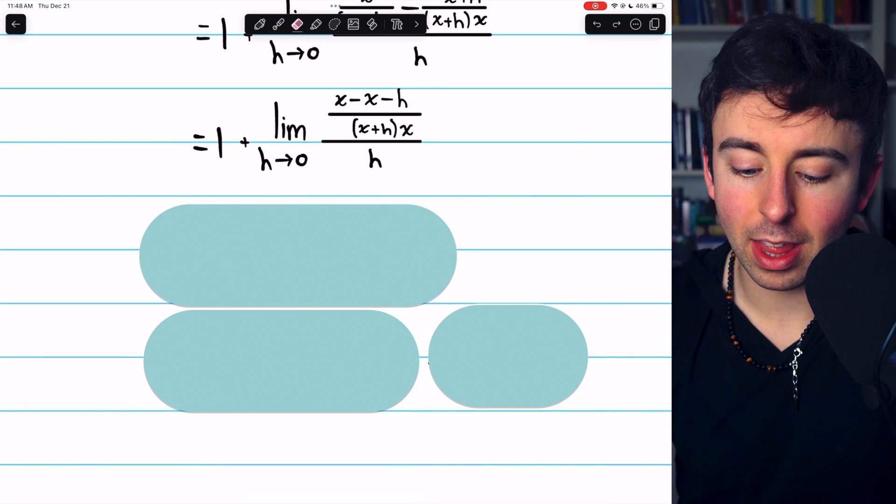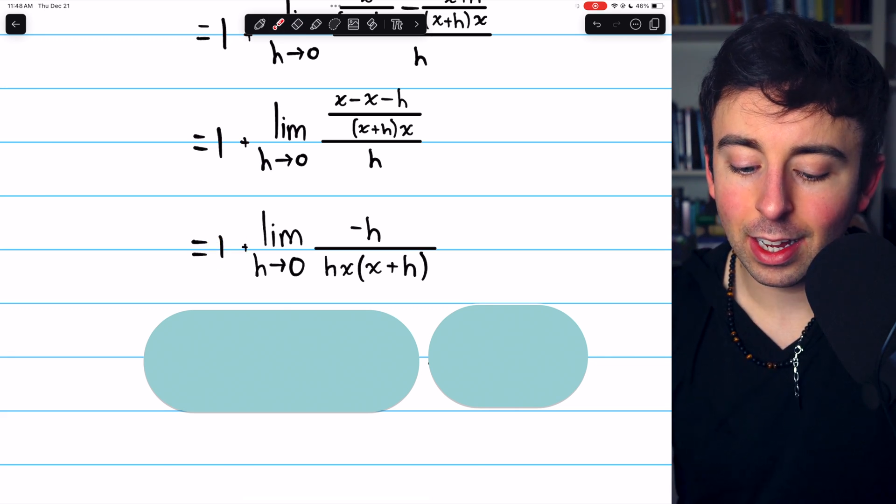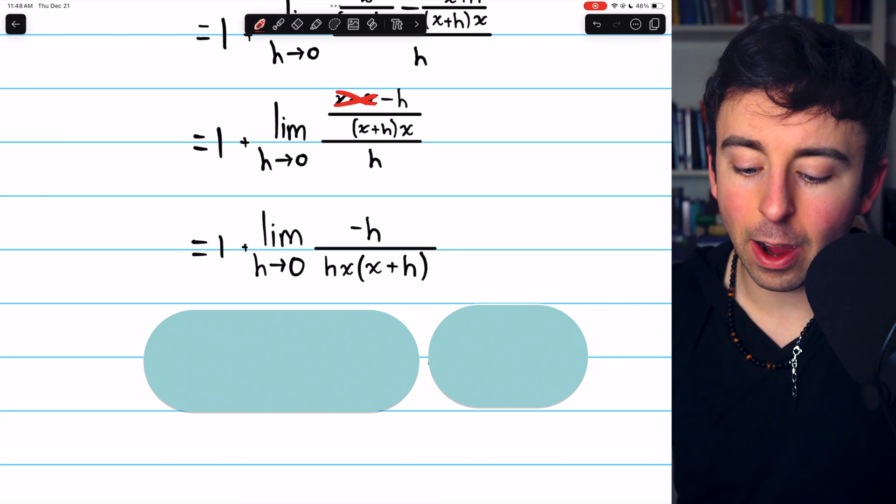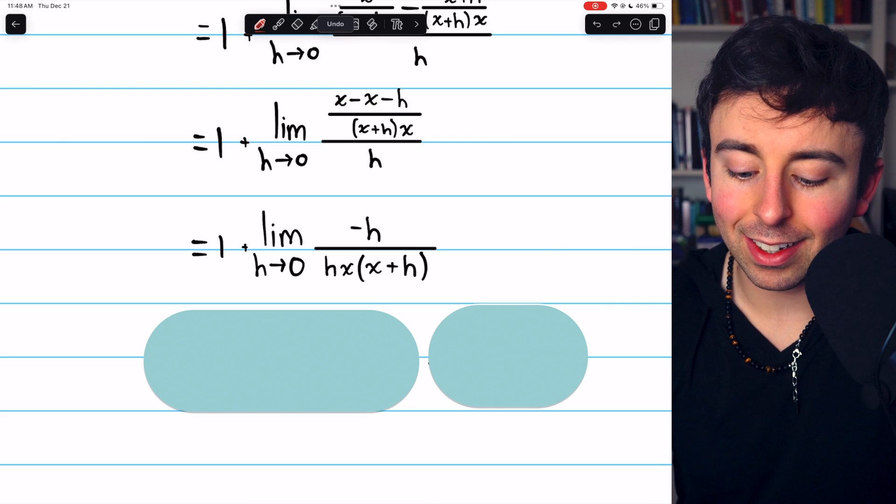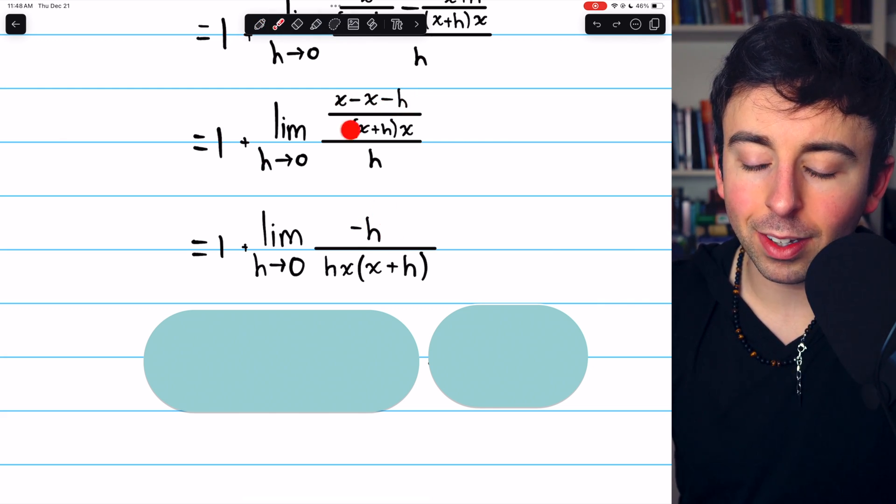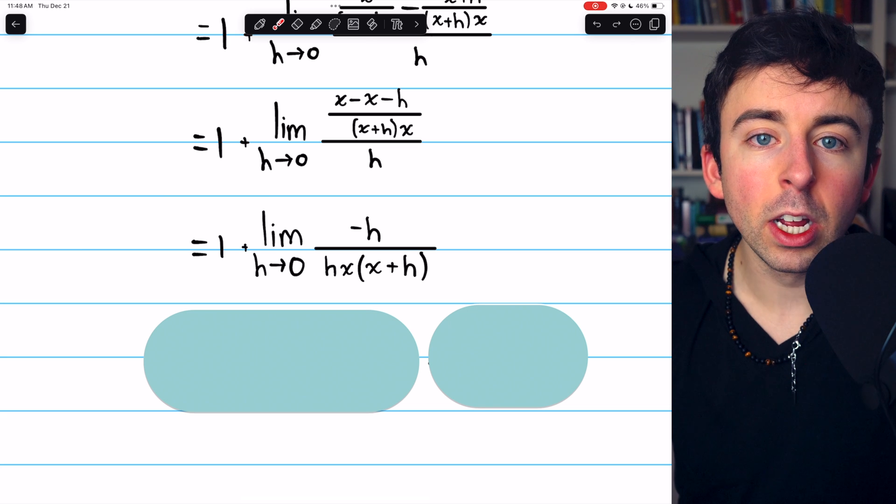All right, we are almost there. Now we have 1 plus, look up here, the x's cancel out. So we just have minus h in the numerator, and this x plus h x in the denominator, we can put in a single denominator with h down there.